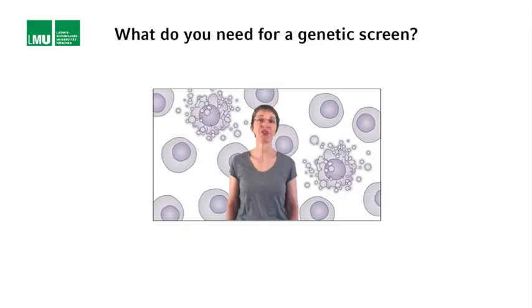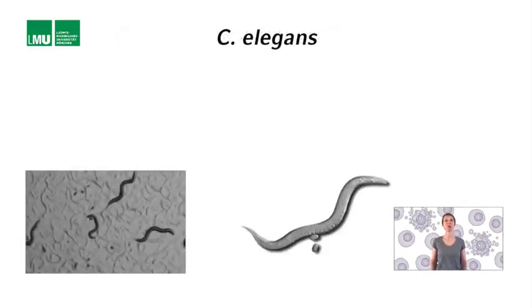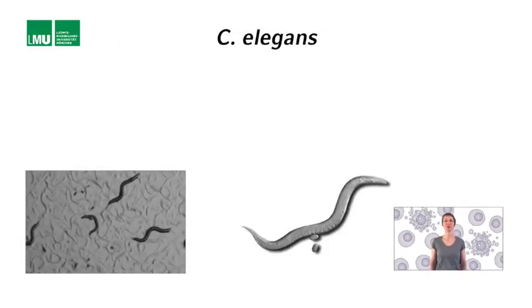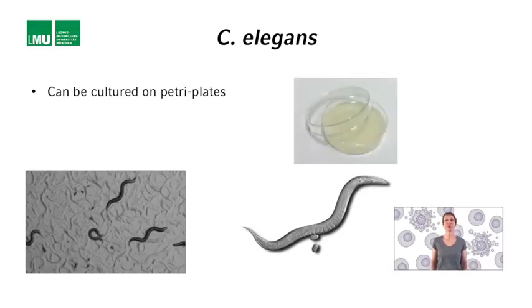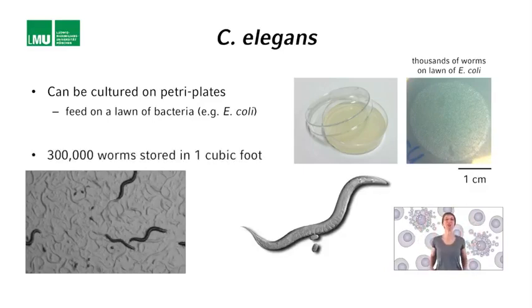Does C. elegans fit the bill for this second criteria as well? Absolutely. C. elegans are small, and fortunately they can also be cultured on petri plates with agar and a lawn of bacteria such as E. coli, which they feed on. Very economical. Within a cubic foot of incubator space, you can keep about 300,000 C. elegans worms.